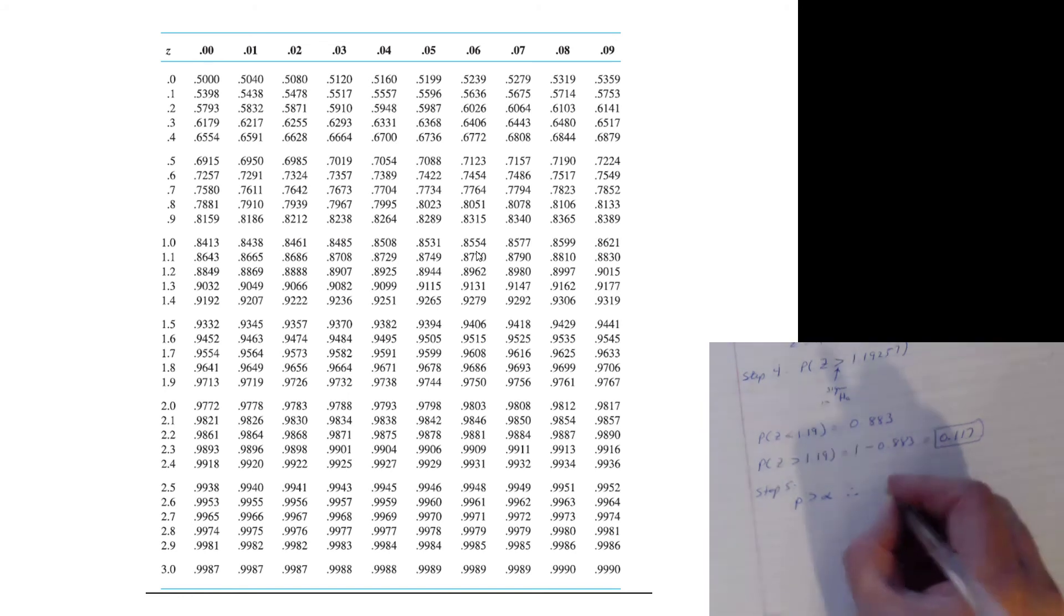Way too risky for us. We'd say, okay, thanks, but no thanks. Therefore, we do not reject H₀ with alpha equal to 0.02.